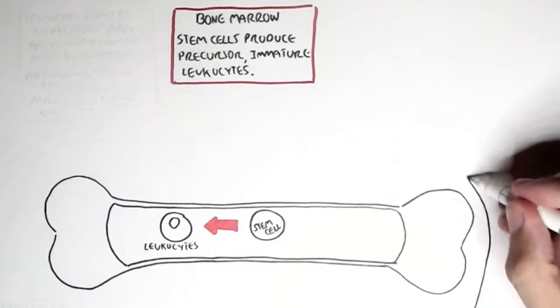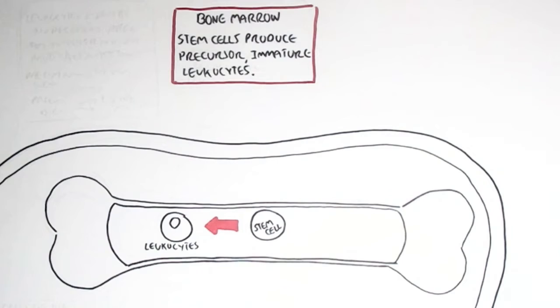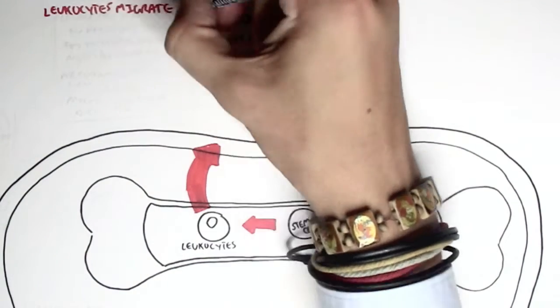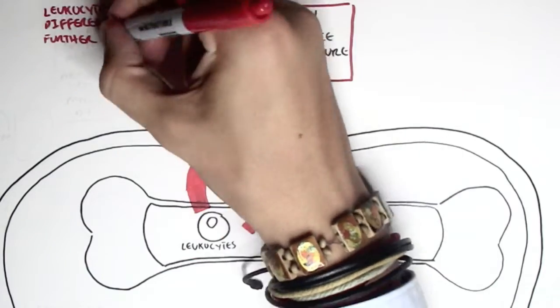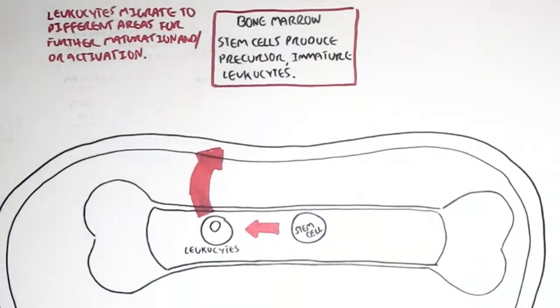And then these leukocytes can be immature precursor leukocytes, which when they leave the bone marrow, they will migrate to different destinations, different areas, different tissues.